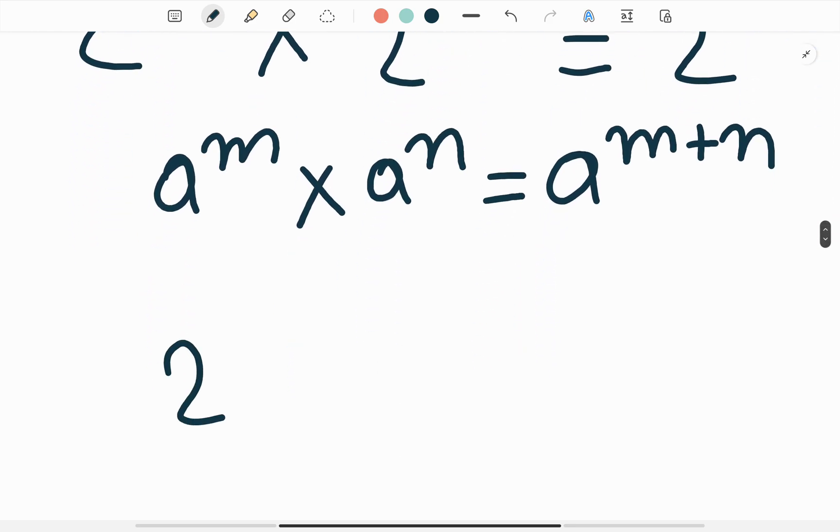So here is 2 to the power x plus 2x is equal to 2 to the power 24.